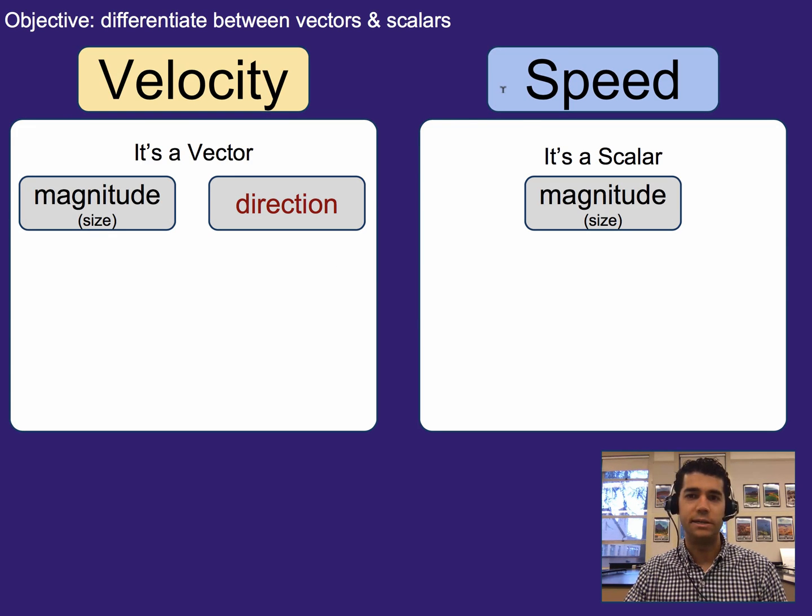They're both describing how fast something's going, but they mean slightly different things. Speed is a scalar. Now, this might be the first time you hear that word, but scalar just means it is something that we measure that happens to only have size. So, it's 22 miles per hour, or 10 kilograms would be another example of a scalar. We have the number associated with it and the units.